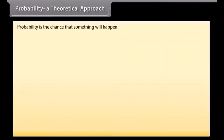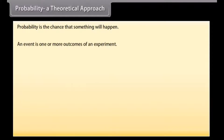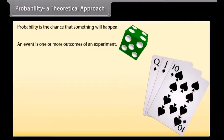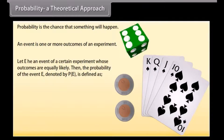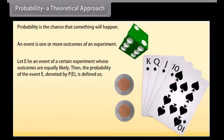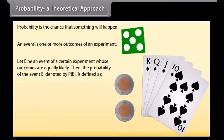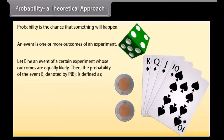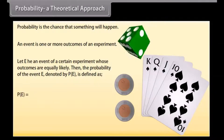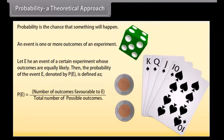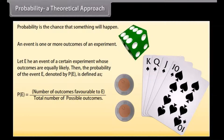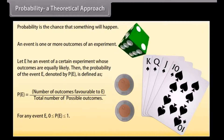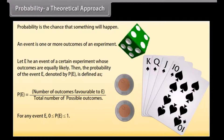Probability — a theoretical approach. Probability is the chance that something will happen. An event is one or more outcomes of an experiment. Let E be an event of a certain experiment whose outcomes are equally likely. Then the probability of event E, denoted P(E), is defined as: P(E) = number of outcomes favourable to E divided by total number of possible outcomes. For any event E, 0 ≤ P(E) ≤ 1.